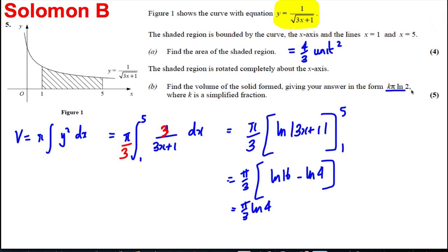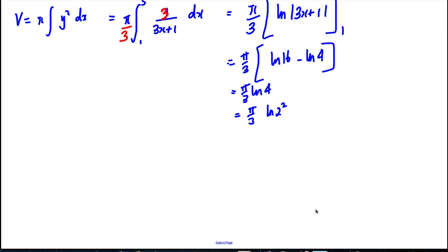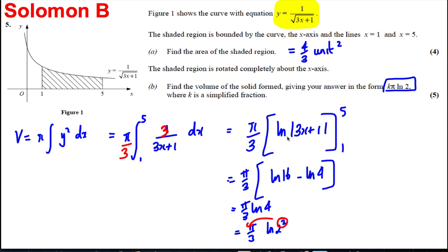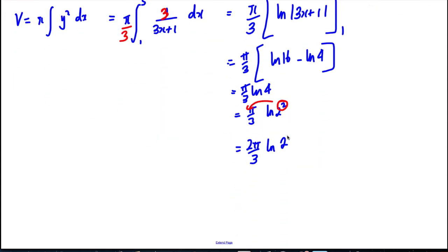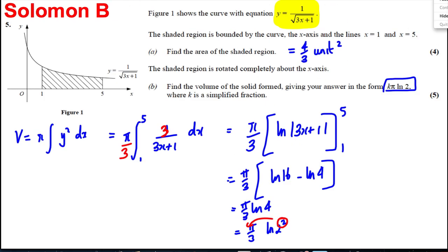Not quite finished because it said give your answer in the form k pi ln 2. So I'm going to write ln 4 as ln 2 squared. And then I'm going to bring down this power of 2 down here. So I get myself the answer 2 pi over 3 ln 2. And that is in the form it wants. It in fact wants some number times pi, so 2 thirds pi ln 2. And that is the final answer exactly as it wants in the question. Thank you.